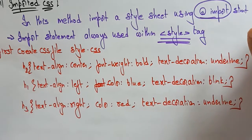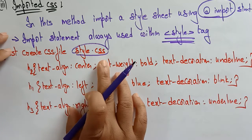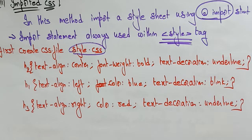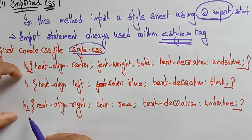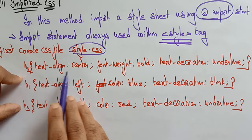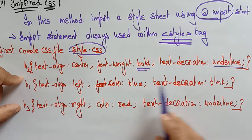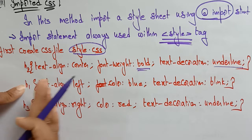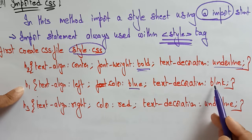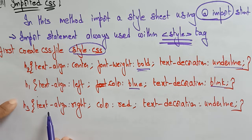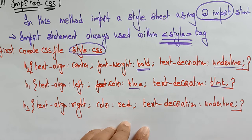First, you have to create one CSS file — that is style.css — just like an external cascading style sheet. There I am using the selectors H2, H1, and H3. The three selectors have text alignment center and font weight bold. Text decoration is underline for H2. H1 has text alignment left. The color is blue and text decoration is blink. And H3 selector has text alignment right, color red, and text decoration underline.